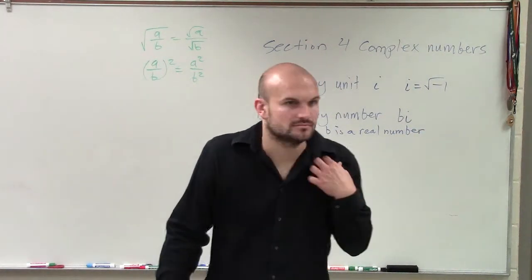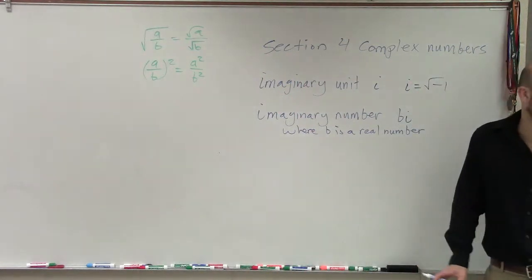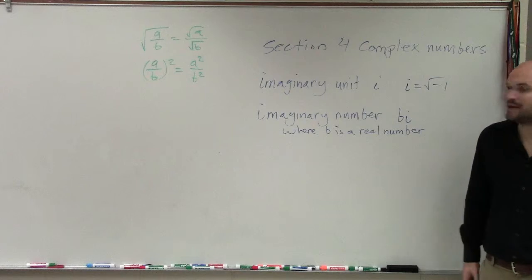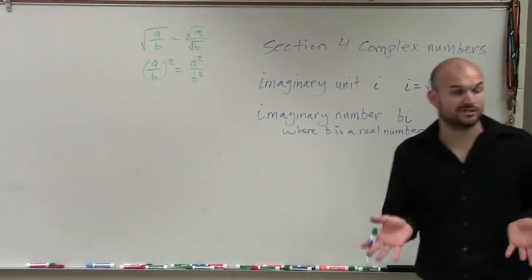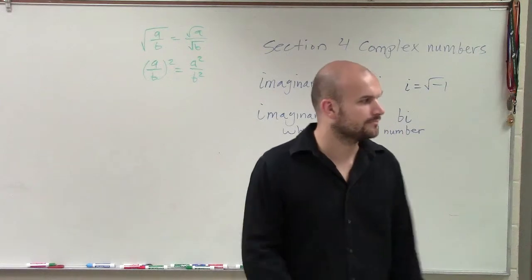So all B is is just a real number. So it's like 5i. Or even i is a real number because you have one of them, one times i. So all imaginary numbers are is when you have an imaginary unit multiplied by your coefficient, which would be our real number.